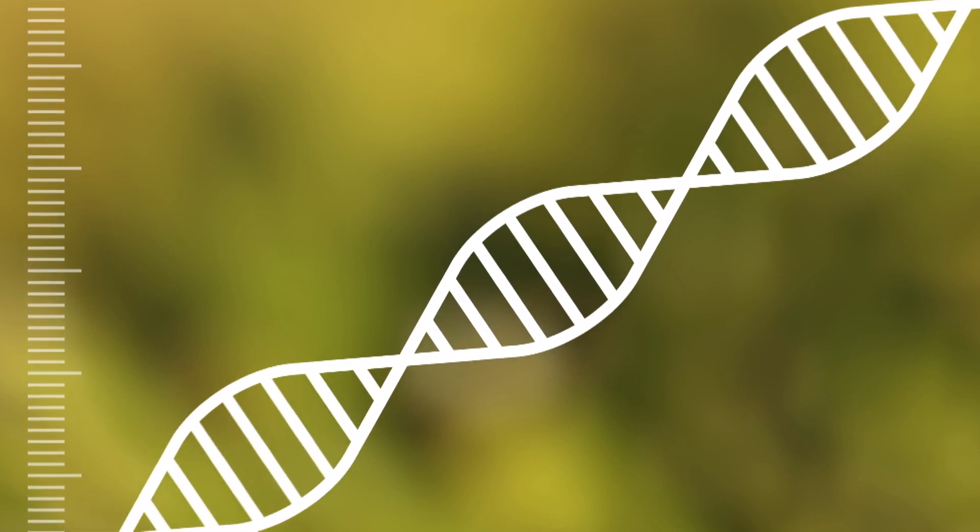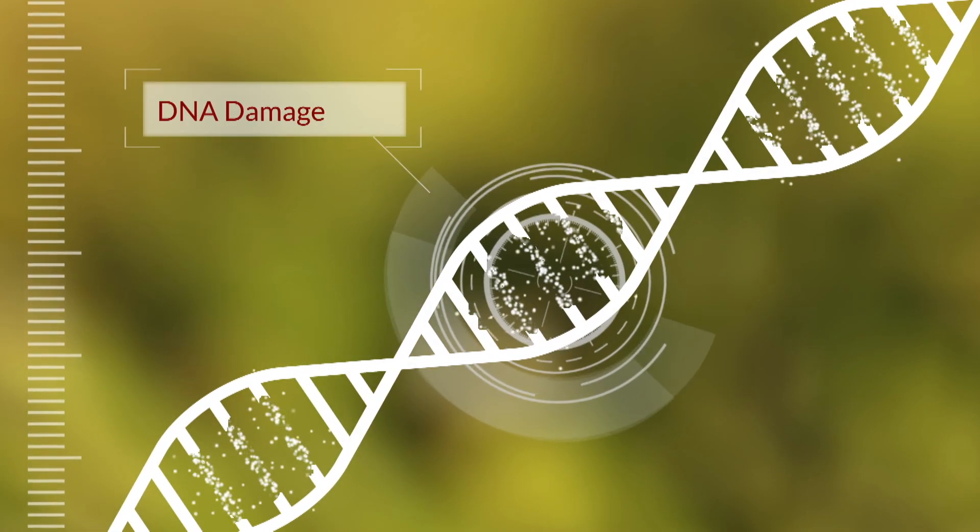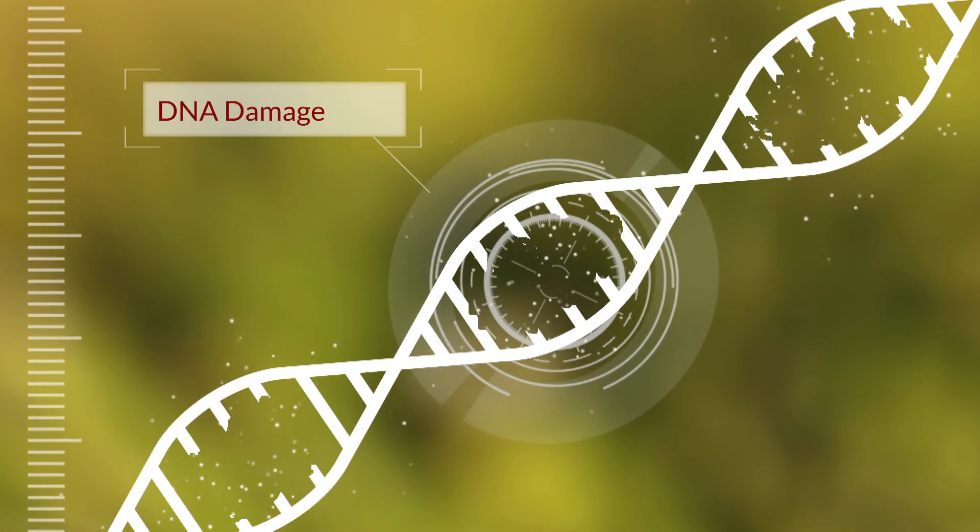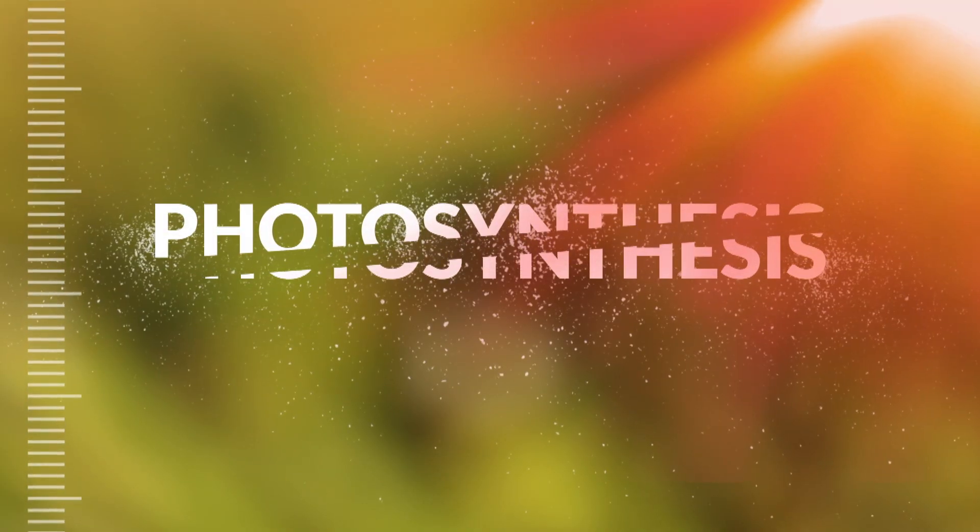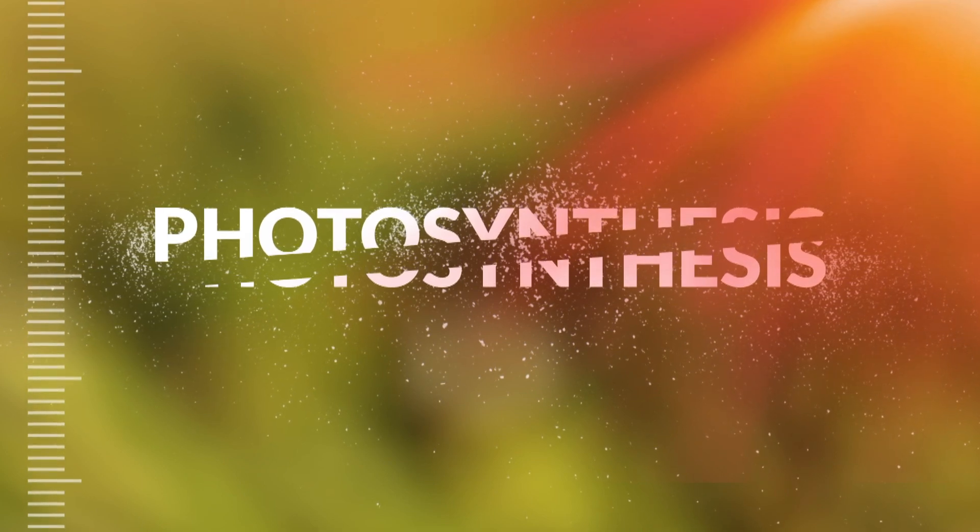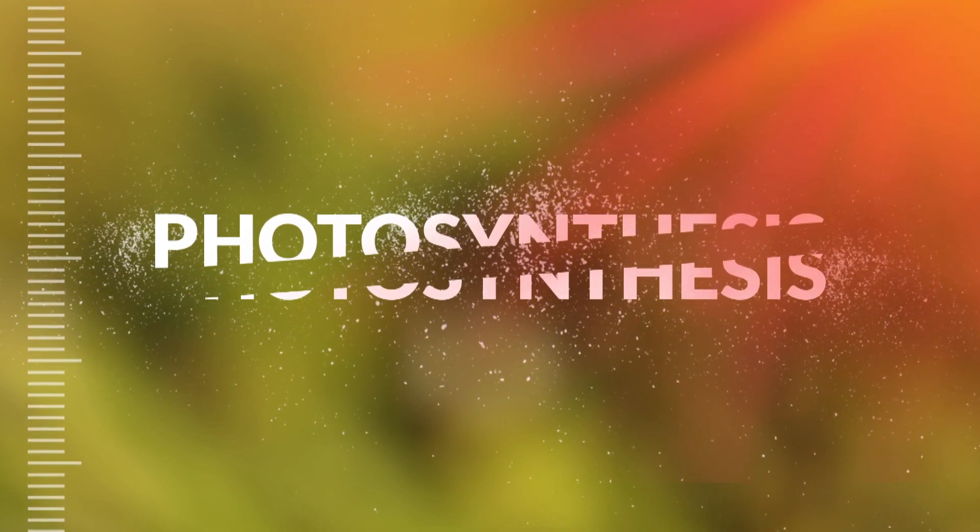UVB radiation in particular can damage DNA at the molecular level. When it comes to turf grass, UVB waves impair photosynthesis which affects plant size, health, and quality.